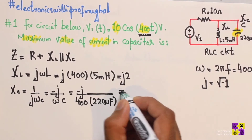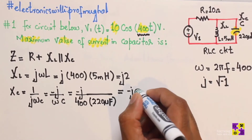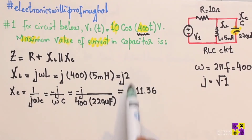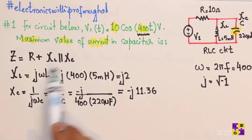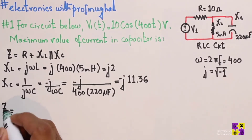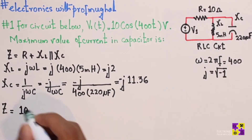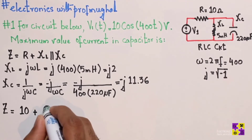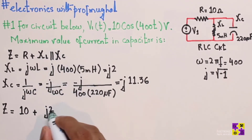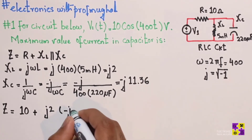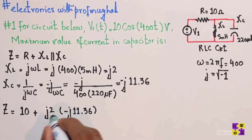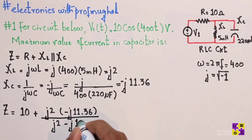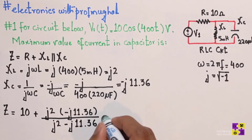Doing the math gives us −j11.36. Now that I have both values, I'll plug them into the impedance equation. Impedance equals resistance, which is 10 ohms, plus XL in parallel with XC. So that's j2 parallel with −j11.36, giving us j2 times (−j11.36) divided by j2 + (−j11.36), which is j2 − j11.36.